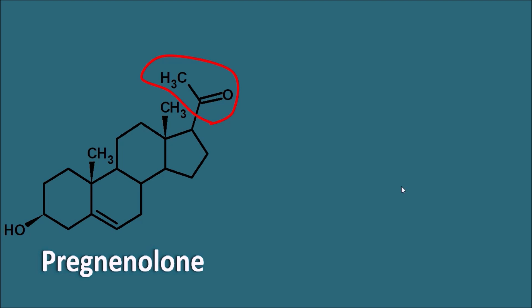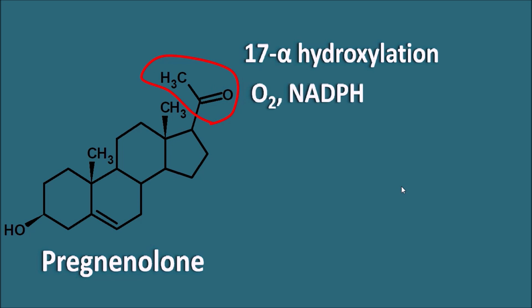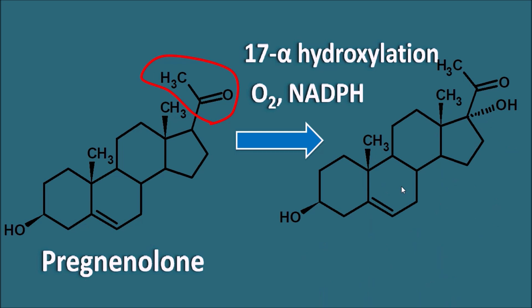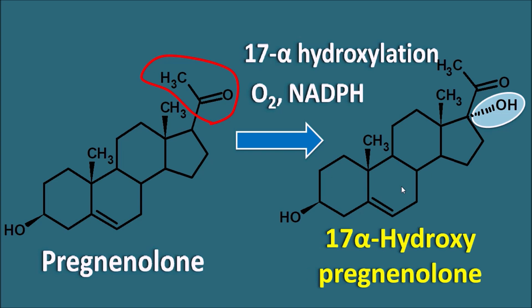The first step is to remove the side chain, but in order to remove it, we initially have to introduce a hydroxyl group at the 17th position. So the first step is 17-alpha hydroxylation in the presence of oxygen and NADPH. Here you can observe the hydroxyl group is attached in alpha configuration — this is nothing but 17-alpha hydroxy pregnenolone.